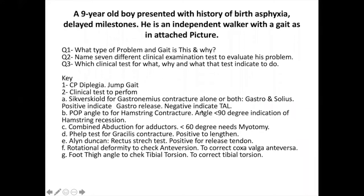He has a popliteal angle less than 90 degrees. Negative indicates TAL — meaning there was a rocker bottom. He has a gastrocnemius contracture as well. Combined abduction of 60 degrees. The Ely/Duncan test was little bit positive — when it is not significantly positive, you do not touch the quadriceps tendon, otherwise he will become worse. There was also rotational deformity of anteversion and tibial torsion.